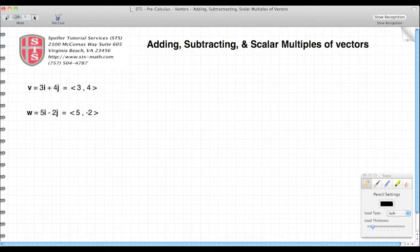Vector V has a horizontal component of 3i and a vertical component of 4j, which can also be depicted with angular brackets <3, 4>. Then we have vector W. Its horizontal component is 5i and its vertical component is -2j, shown in angular brackets as <5, -2>.